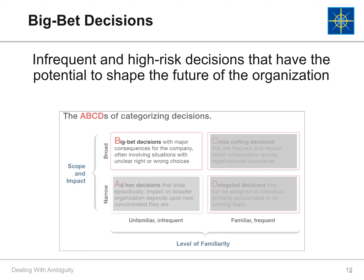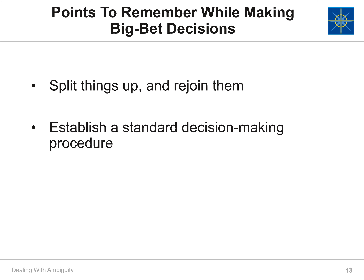Next, let's talk about big bet decisions. These decisions are infrequent but with high risk. They have the potential to shape the future of the organization. These often involve situations where the right or wrong choices are ambiguous. Because these decisions are high risk, break the decision into pieces to gain some clarity, then rejoin the pieces together to observe any variances, which may help you make a decision. In addition, establish a standard decision-making process so you can go back and see how the decision was made if you need to pivot.